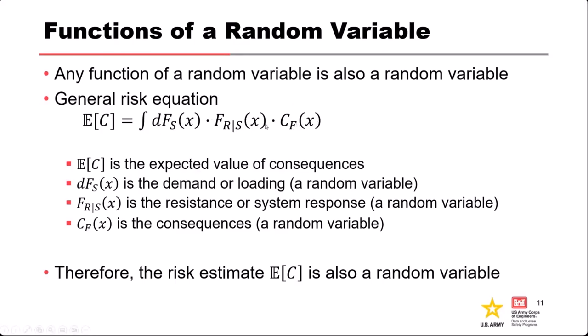Each of the three elements on the right is a random variable with some uncertainty. We can make choices in risk analysis about whether to explicitly model that uncertainty, but regardless, all three are random variables. Because annualized consequences are a function of those random variables, the annualized consequences themselves are also a random variable with uncertainty. Monte Carlo simulation is one of the key techniques used to propagate that uncertainty through each element to get an estimate of uncertainty in the risk.